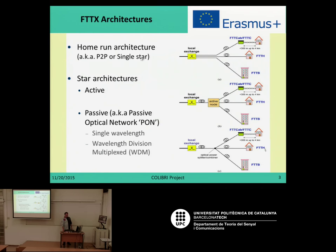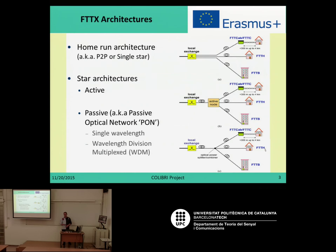Alternatively, it was proposed the active star architecture, which is based on an active node that is connected through a single fibre, and from there all the fibres are connected. The disadvantage is that this active node requires power supply and specific conditions because of the electronics involved.